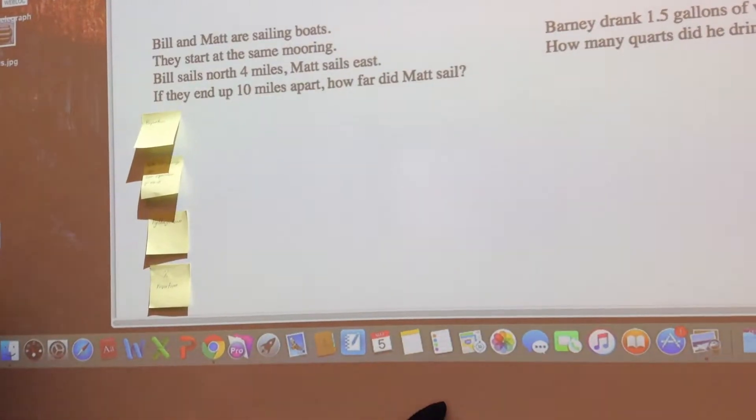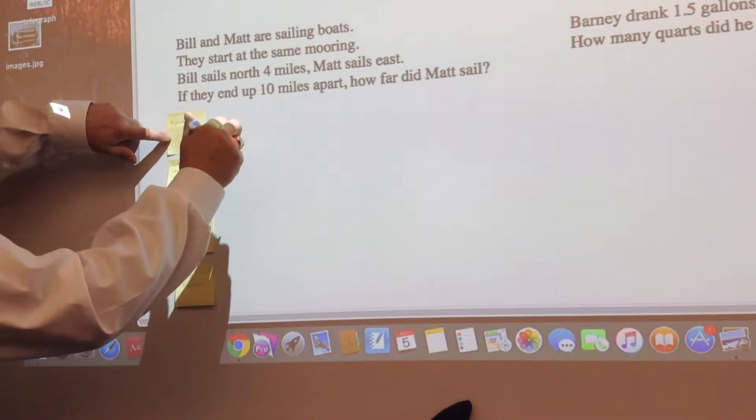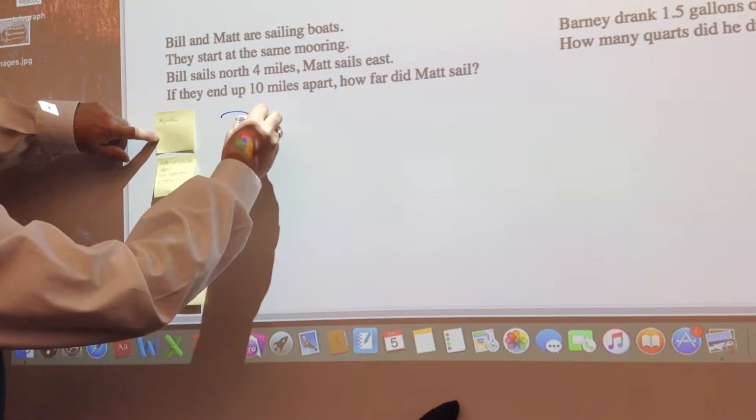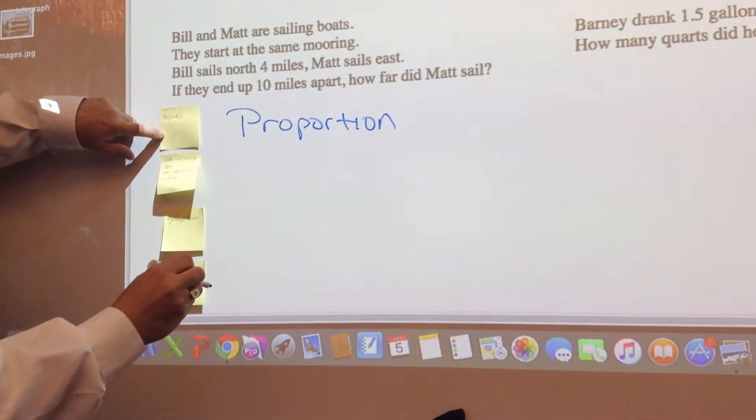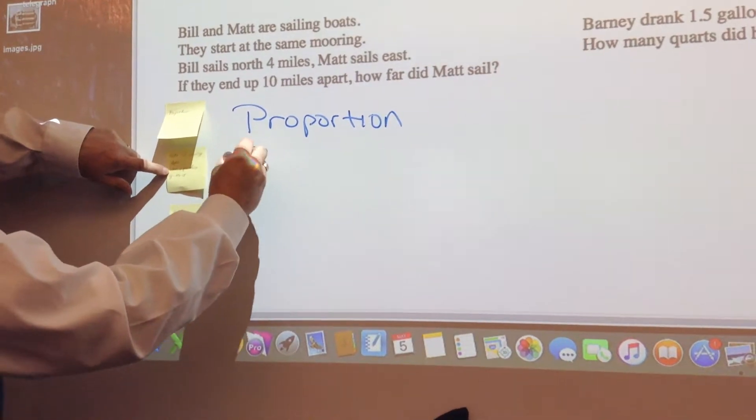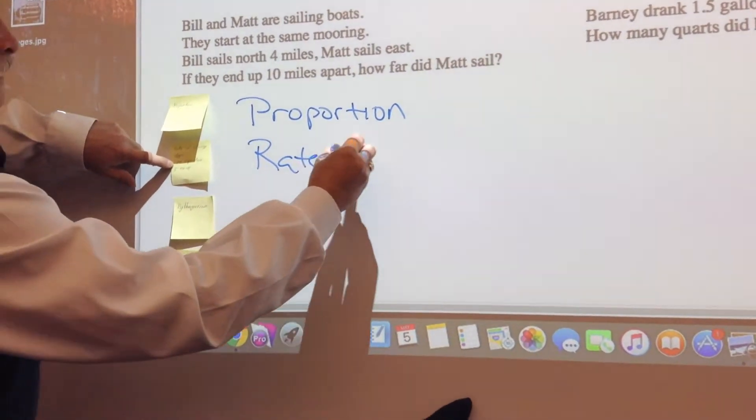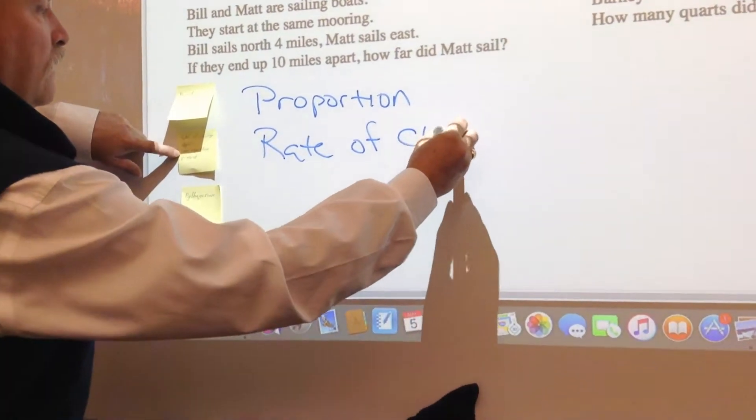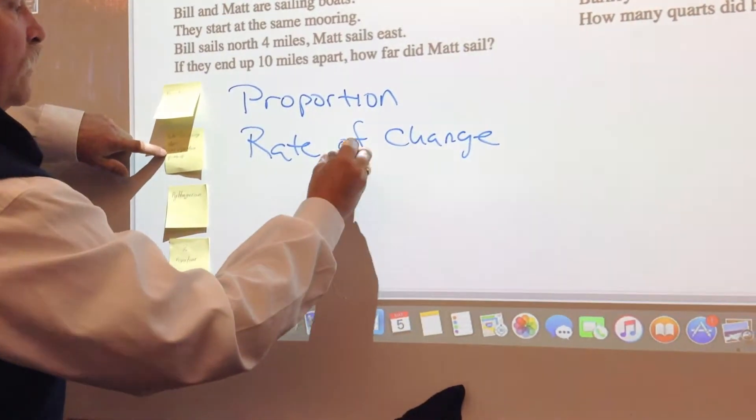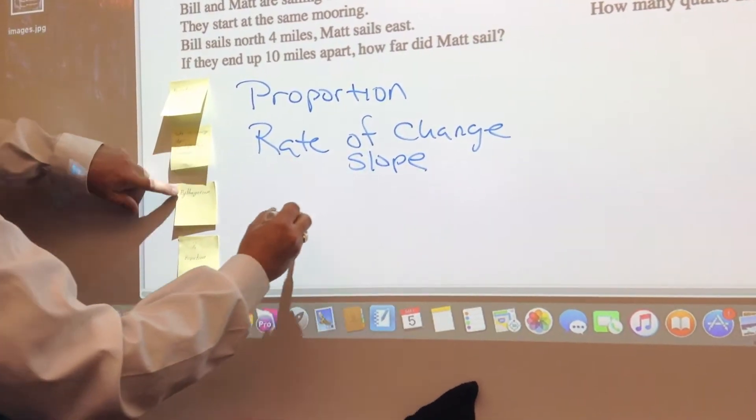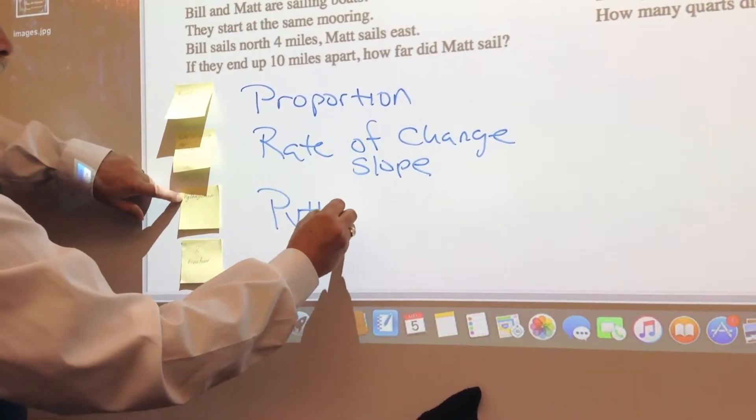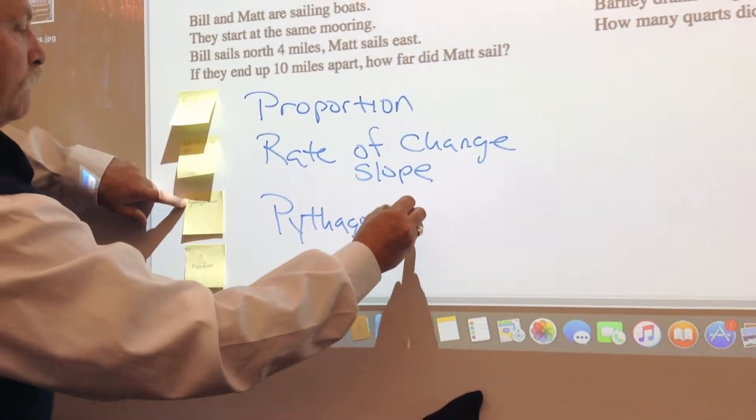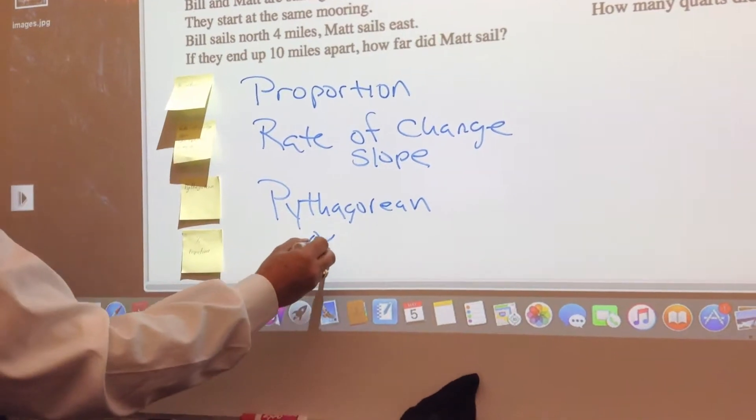You're going to create four post-its. The first post-it is going to have the word proportion on it. The next one, rate of change, that slope. So, Pythagorean. And the last one is percent proportion.